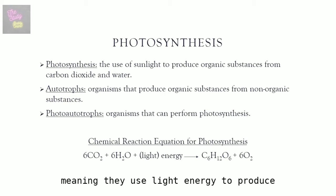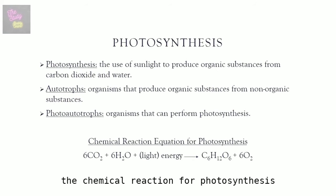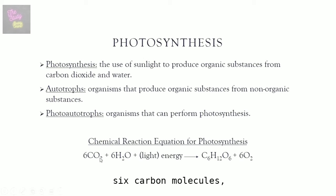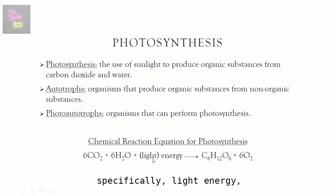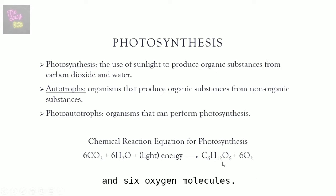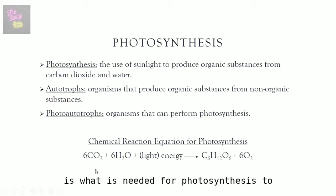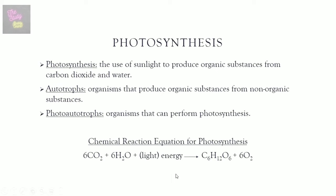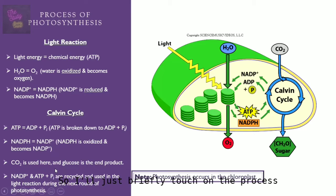Photoautotrophs use light energy to produce organic compounds. The chemical reaction for photosynthesis is: six CO₂ molecules plus six water molecules plus light energy, which results in one glucose molecule and six oxygen molecules. Everything before the arrow is what is needed for photosynthesis — called the reactants — whereas everything after the arrow is what is produced — called the products.